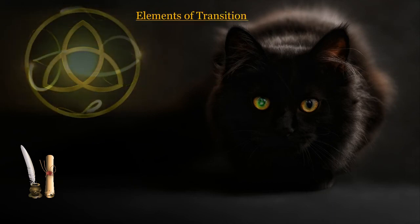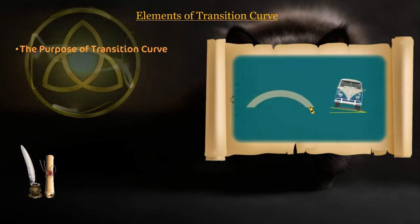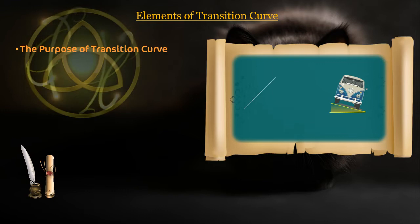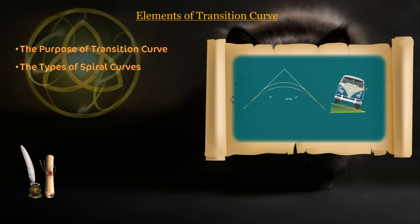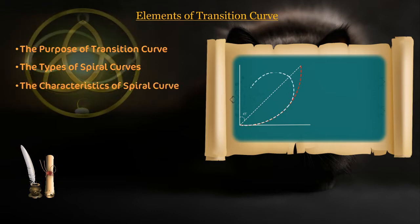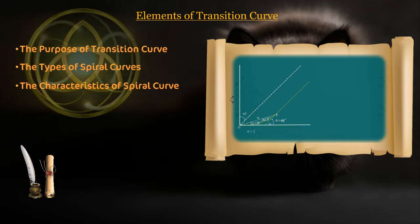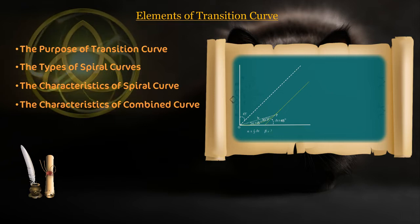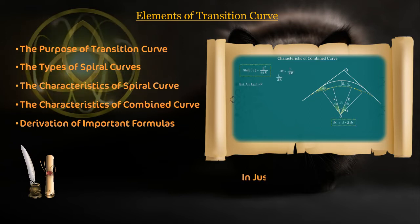In this episode, we will study about the elements of transition curves: the purpose of the transition curve, the types of spiral curve, characteristics of spiral curve, characteristics of combined curve, and finally, understanding of theory and deriving some important formulas. All in just 12 minutes.